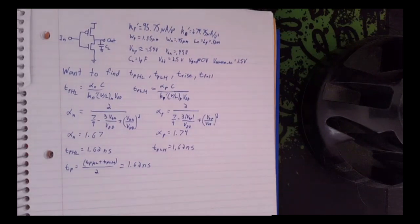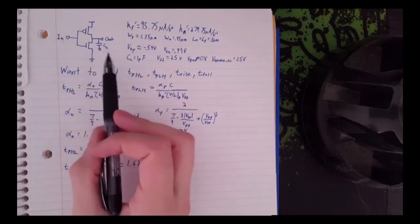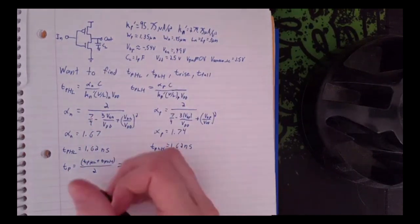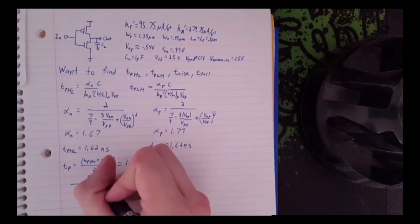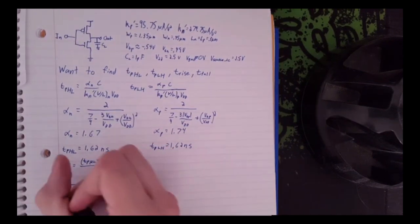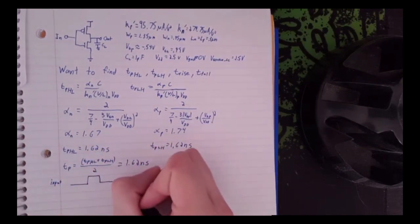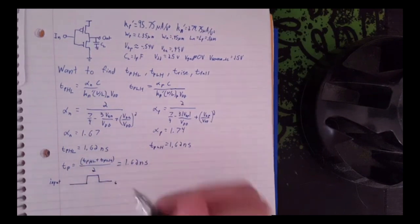Now we need to find the rise time and the fall time. So to do that, we're going to remember that the curve of the transient response to this is going to be exponential. You're going to have an input that looks like this. So this is the input. And this is time. And this is low. And this is high.